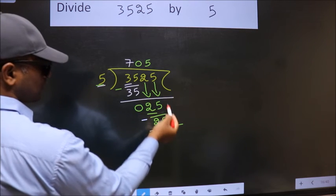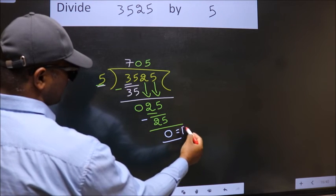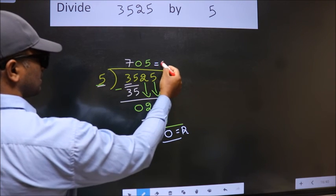No more numbers to bring it down. So, we stop here. This is our remainder. This is our quotient.